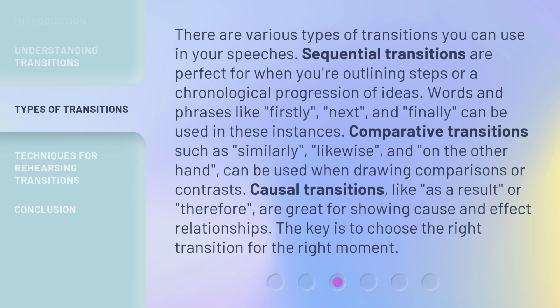There are various types of transitions you can use in your speeches. Sequential transitions are perfect for when you're outlining steps or a chronological progression of ideas. Words and phrases like firstly, next, and finally can be used in these instances.